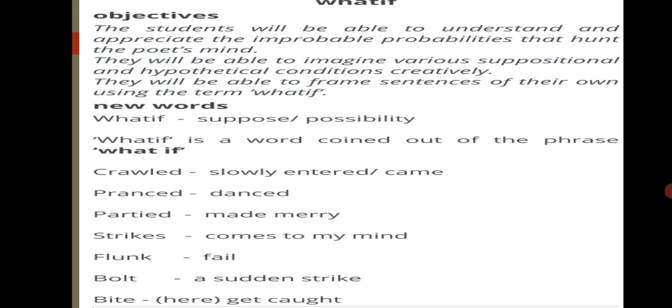Now, what are we going to learn in this poem? You will be able to understand and appreciate the improbable possibilities or probabilities that haunt the poet's mind. So the things which are mentioned in this poem are the worries of the speaker, and what is meant by improbable is very less likely to happen. Still, the child is thinking, what if this will happen and what if that will happen.